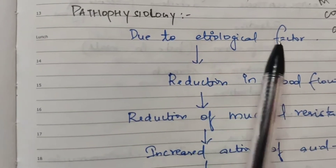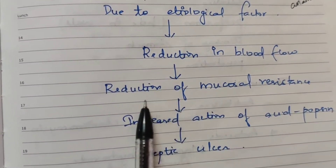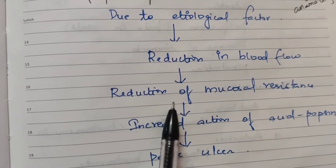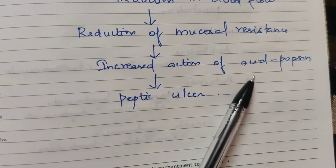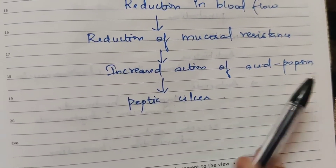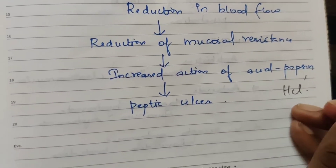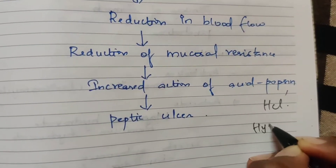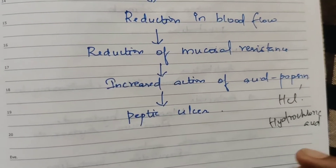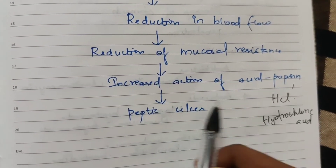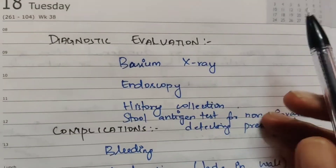Regarding pathophysiology: due to etiological factors, there is blood flow reduction, mucous resistance is reduced, and there is increased action of acid, pepsin, and hydrochloric acid. If there is oversecretion, peptic ulcers result.